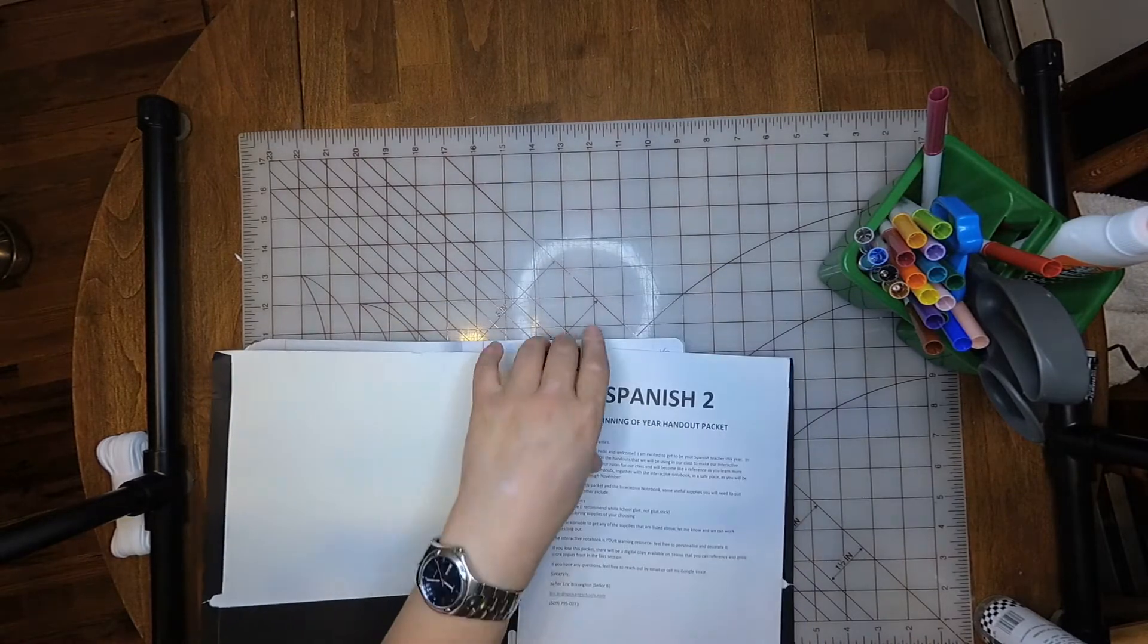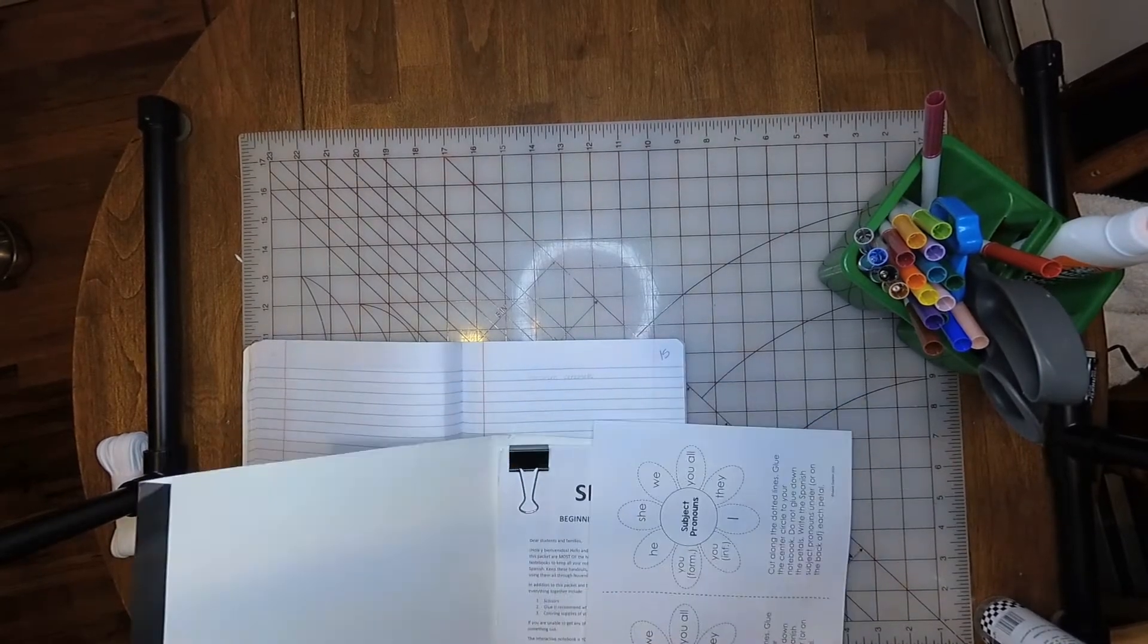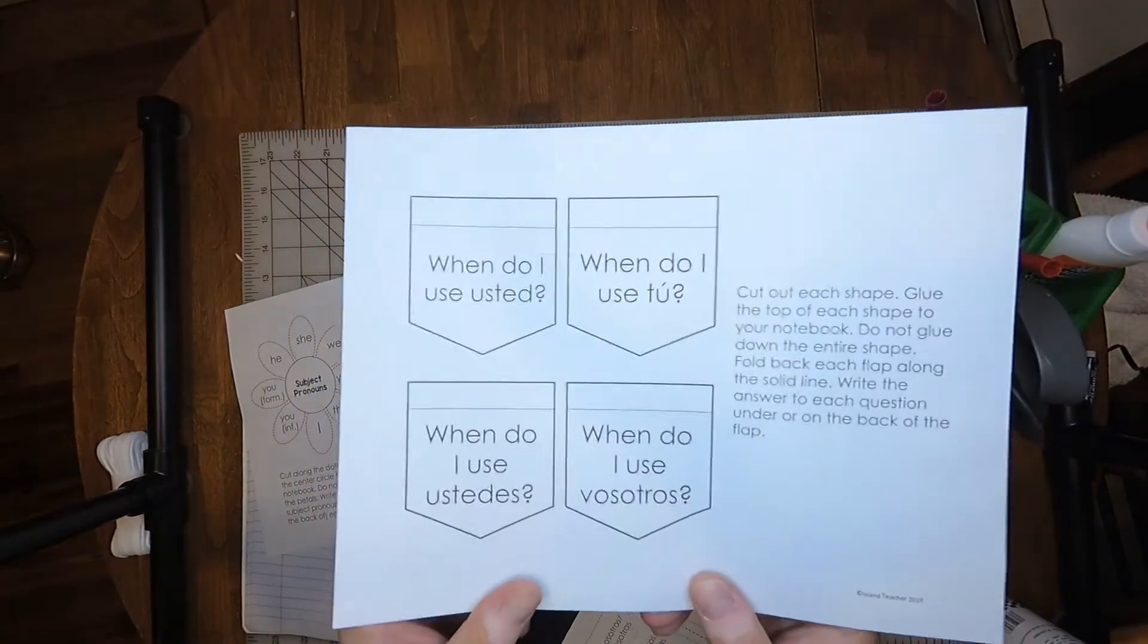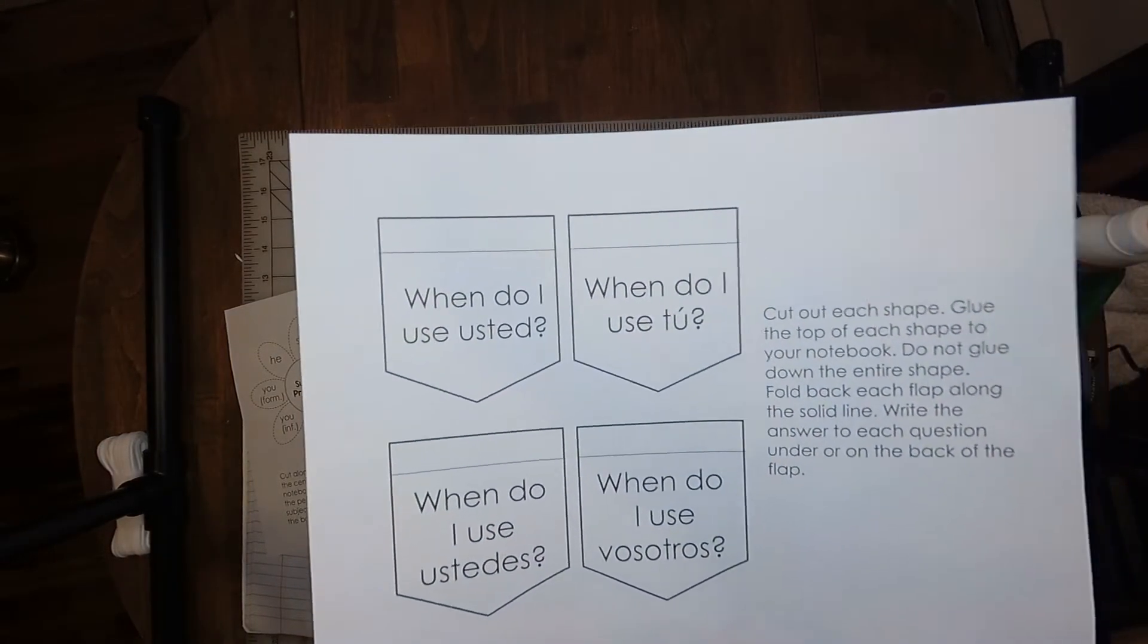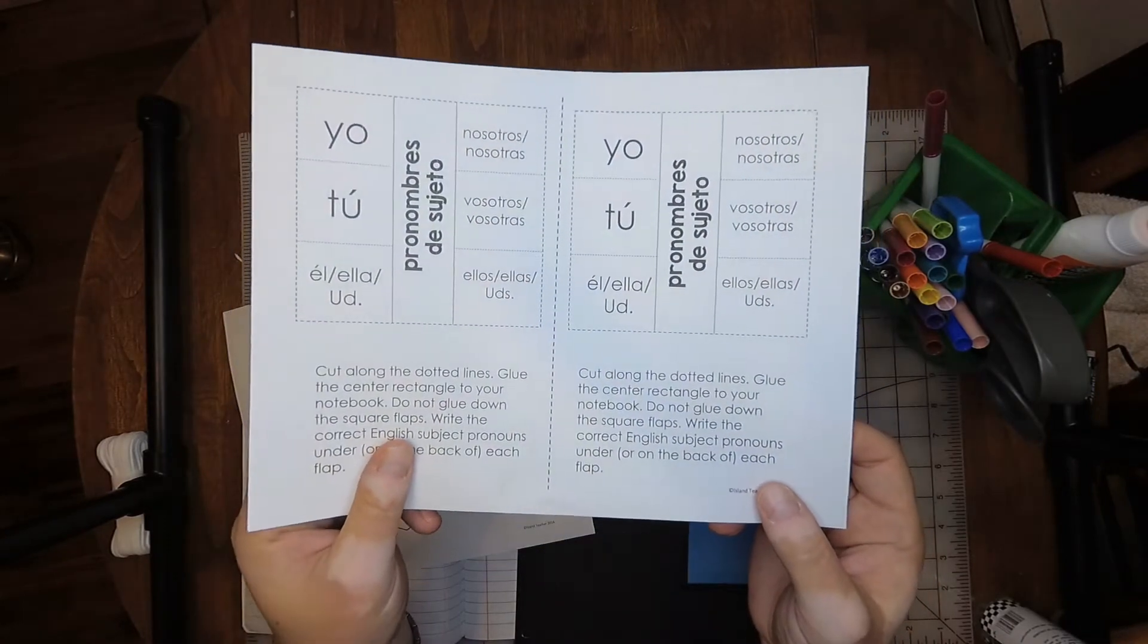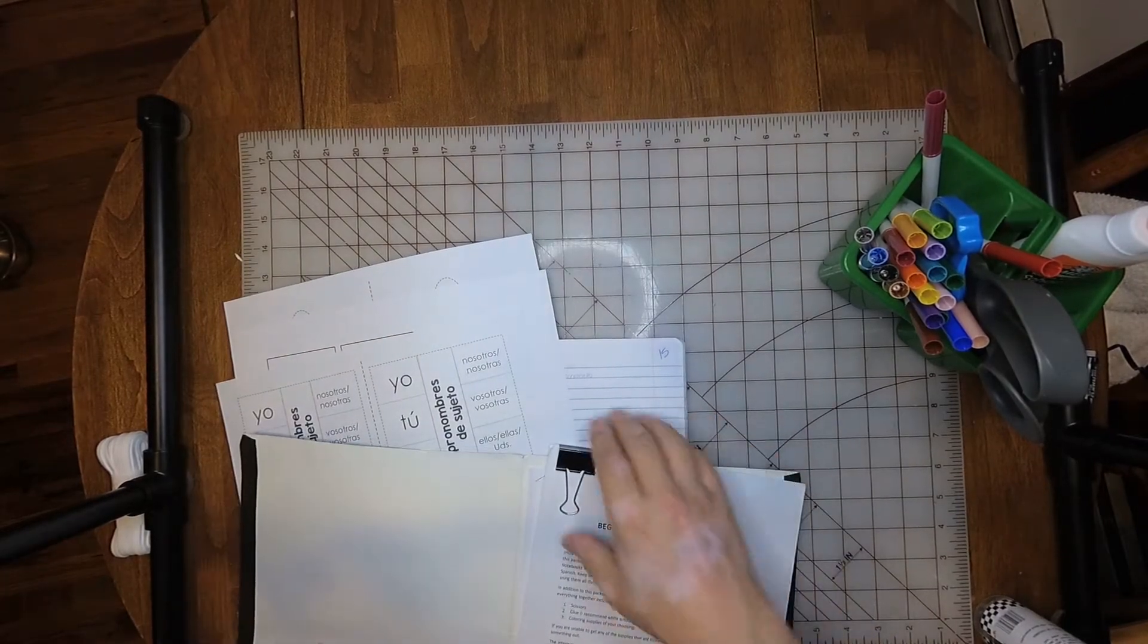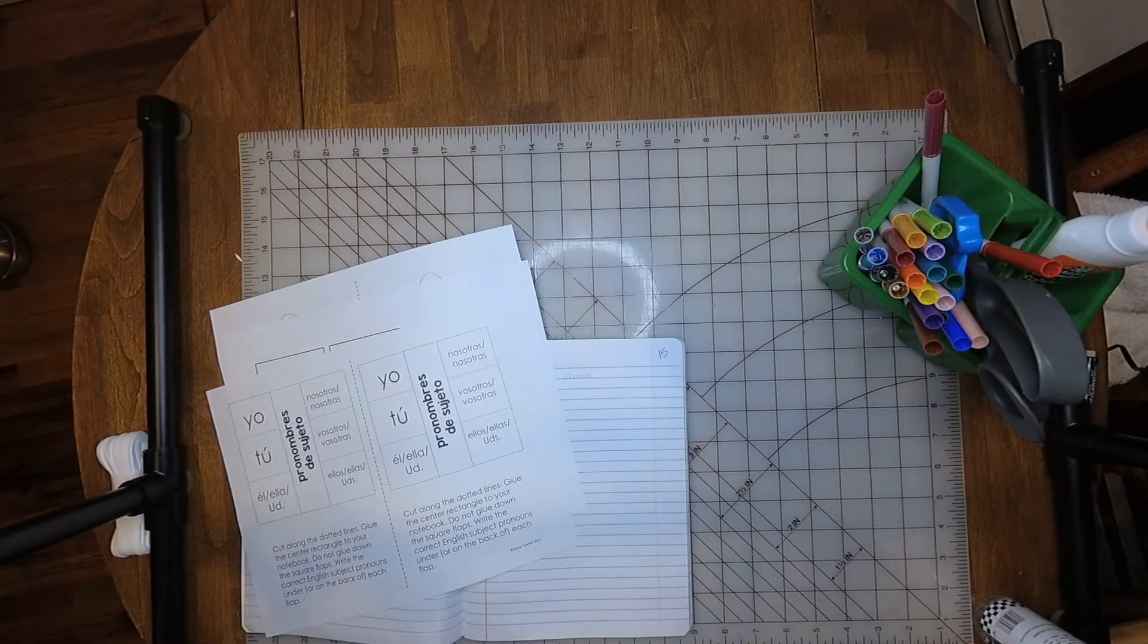From the packet you're going to need to get these three pages. You will need the subject pronoun flowers, the four flags that say when do I use usted, when do I use tú, when do I use ustedes, when do I use vosotros, and also the pronombres de sujeto. After you get these three pages out, go ahead and put everything back in the packet and folder and put everything away so that you've got it for next time.